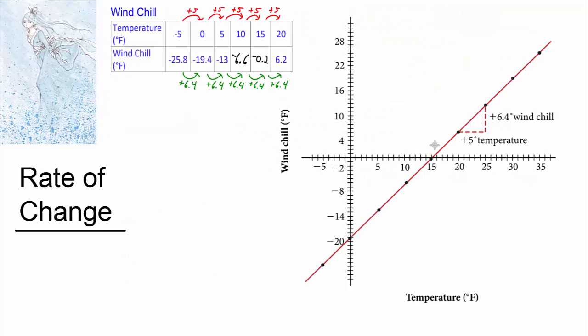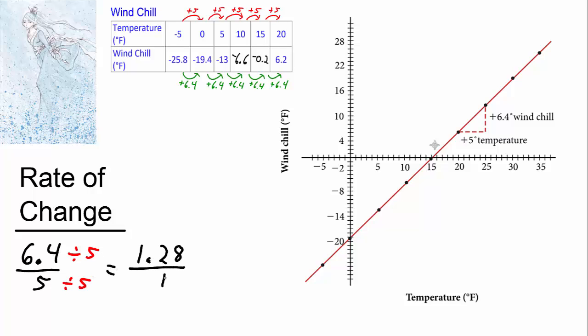Before we write an equation for the windchill problem, let's formalize what we know about the rate of change. The inputs are going by 5 and the outputs are going by 6.4, so the rate of change equals 6.4 over 5. Let's simplify that so we have 1 in the denominator. The rate of change equals 6.4 over 5, or 1.28 over 1, which equals just 1.28. This means that for every 1 degree increase in temperature, the windchill increases by 1.28.